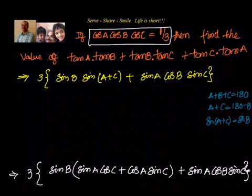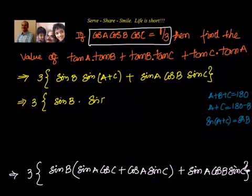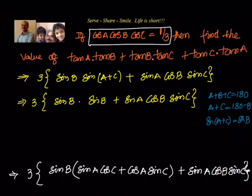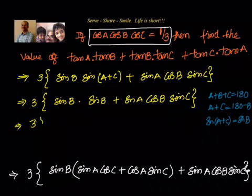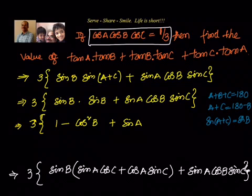Because sin is positive in the second quadrant, sin of A plus C equals sin B. So we can write the expression as 3 times sin B sin B plus sin A cos B sin C, which is 3 times sin squared B plus sin A cos B sin C. Now, we see that if we write sin squared B as 1 minus cos squared B, then we can take cos B common.